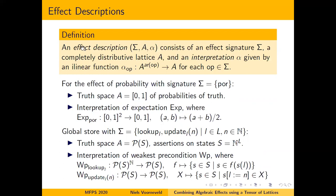To wrap it all together: when talking about an effect we give an effect description consisting of three ingredients — a signature of effect operations, a complete lattice of quantitative truths, and a local description given by i-linear functions for each operation.